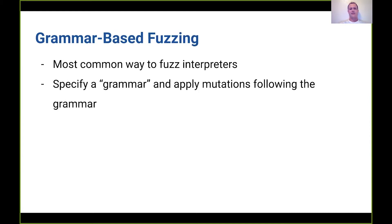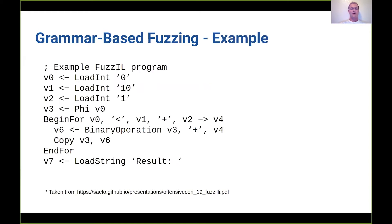On the other hand, we have grammar-based fuzzing, which is the most common way to fuzz interpreters. You specify a grammar and then apply mutations following the grammar. This has shown very impressive results on JavaScript engines and other interpreters. It's found a large number of bugs, and there are some very well-known fuzzers out there for JavaScript engines based on grammar-based fuzzing. One example I'm going to show here, borrowing a couple of slides from his presentations,